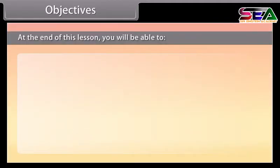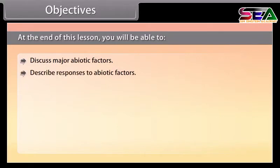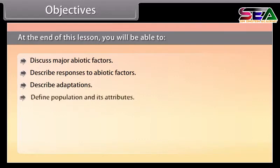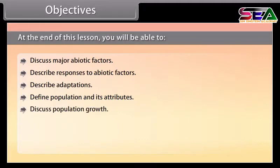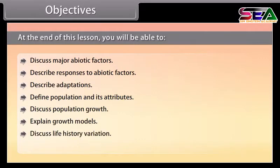At the end of this lesson you will be able to discuss major abiotic factors, describe responses to abiotic factors, describe adaptations, define population and its attributes, discuss population growth, explain growth models, discuss life history variation, and explain population interaction.